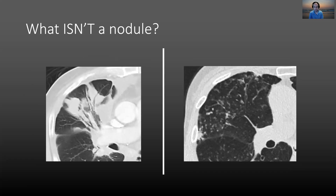So what isn't a nodule? When we have a confluent or constellation of findings, I would not describe that as a nodule. Here on the left is a large area of consolidation or airspace disease — which turned out to be a malignant lymphoma — but it is not a nodule. And here we have a micronodular pattern of clustered or tree-and-bud nodules in a patient with MAI — again, not really the kind of nodule we're talking about.